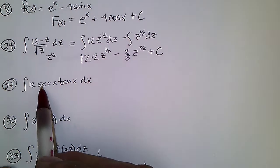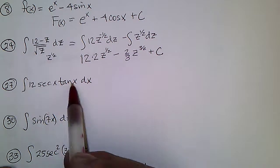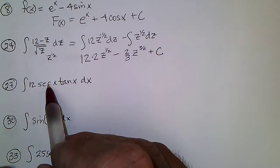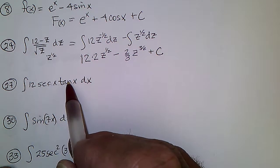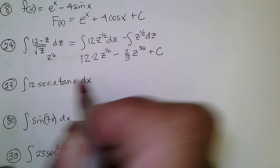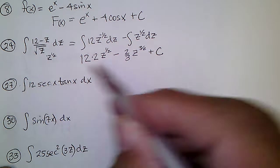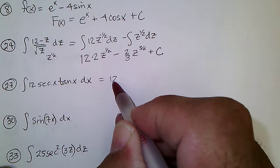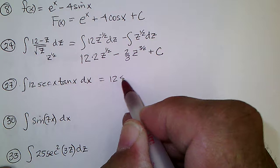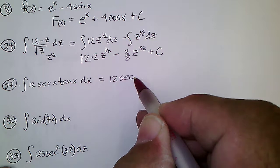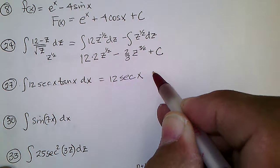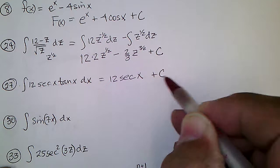This one, we have to remember that the derivative of secant is secant tangent. The constant comes out, so we just get 12 secant x plus C. You've got to remember the derivative of secant is secant tangent.